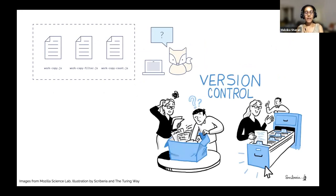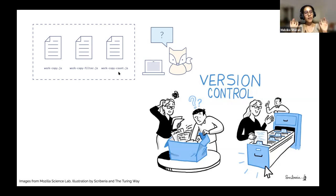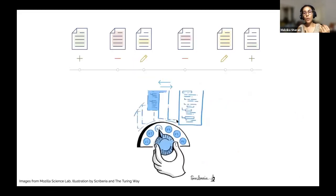What happens a lot of the time when we start creating these kinds of versions is they can be named very fuzzily. You can have a document called 'work copy,' then 'work copy filter' after filtering some information, then 'work copy count' after counting something. All these files accumulate in your folder and are really hard to go back to because they don't tell you exactly when they were created. But when we do version control, there is a systematic preservation of information which you can always go back to. We want one copy of the file with a way to go back to it in version format.